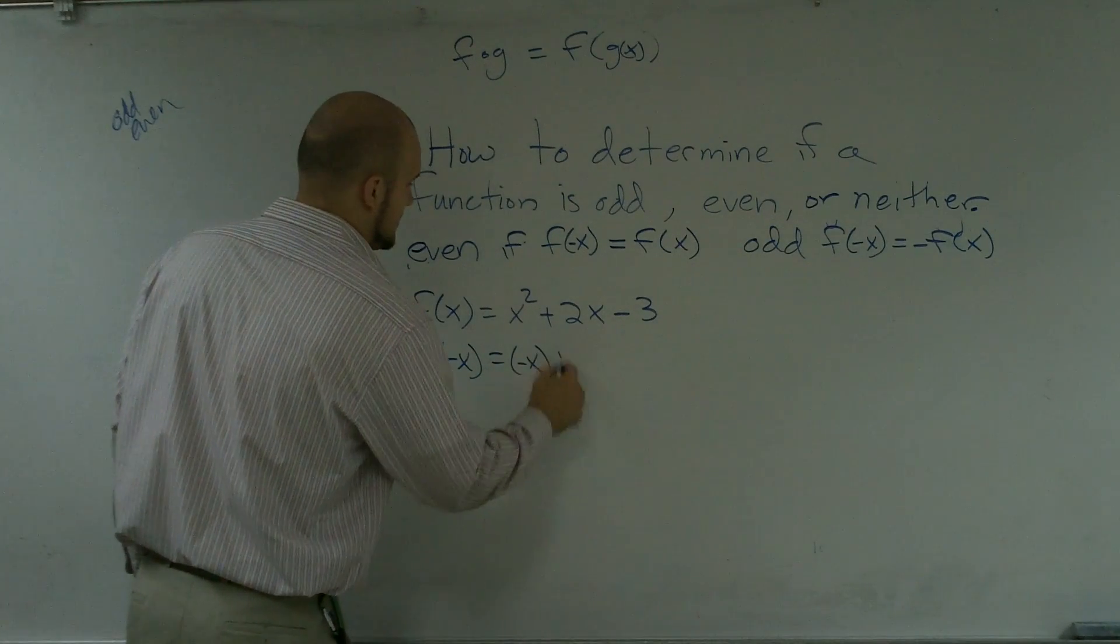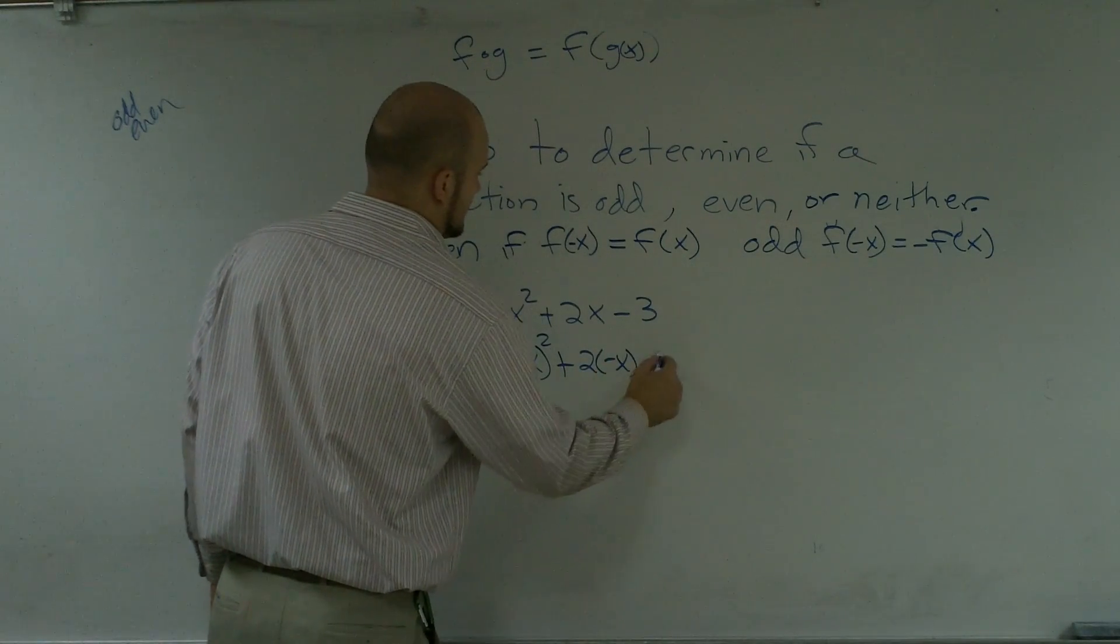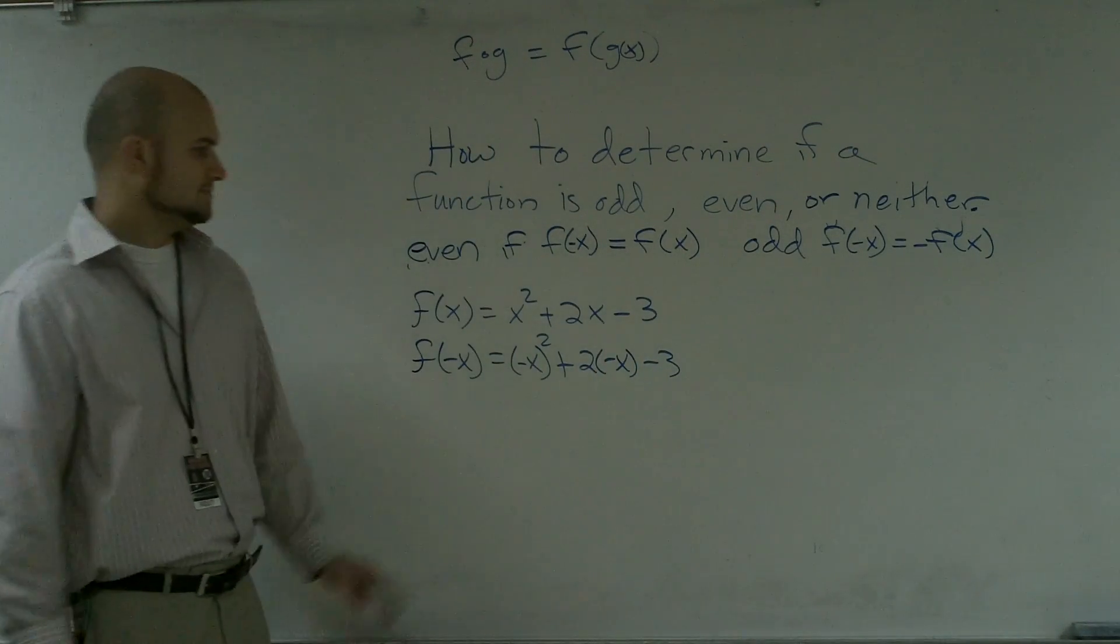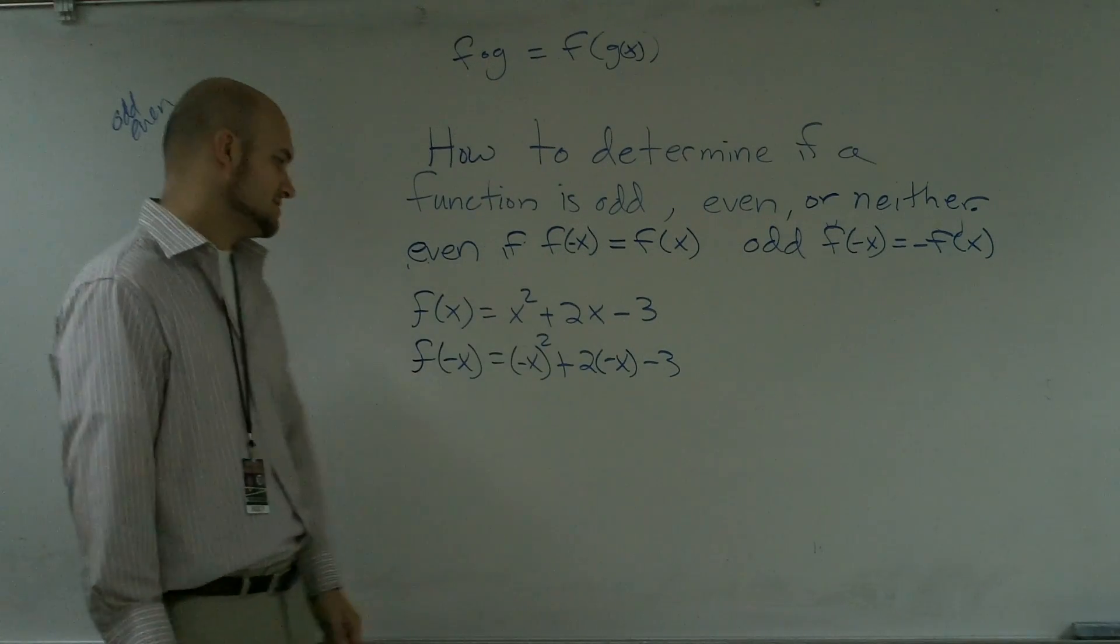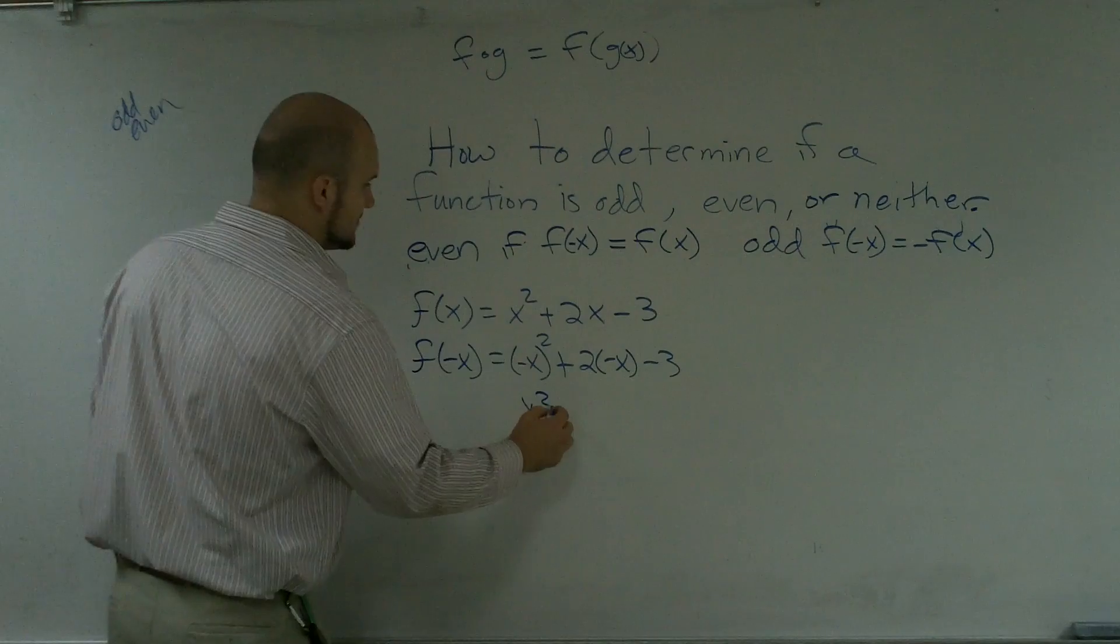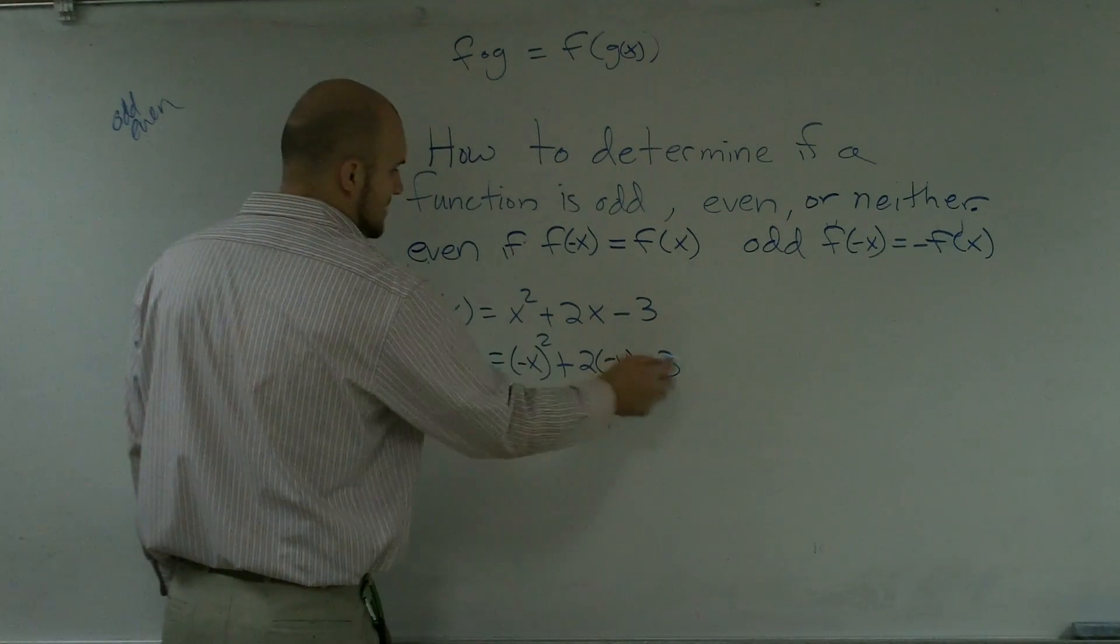So when I do that, everything remains the same. I'm substituting in negative x. Negative x squared becomes x², 2 times negative x is negative 2x, and minus 3.